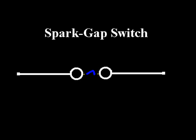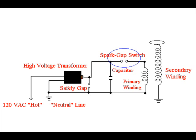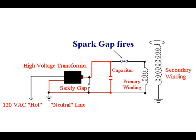The next important part is the spark gap switch. The spark gap acts as a switch to transfer energy to the primary winding. The high voltage transformer charges the capacitor until enough energy has built up to jump across the spark gap. This fires a pulse of oscillating energy into the primary winding.